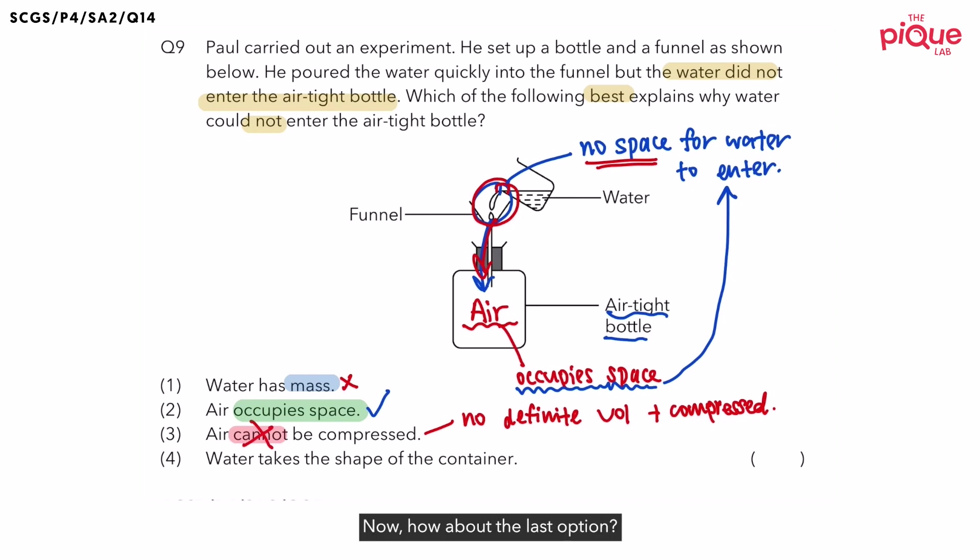Now, how about the last option? Water takes the shape of the container. So is this statement correct? Water is a liquid. Do liquids have definite shape? No, liquids have no definite shape. So if liquid has no definite shape, can liquid take the shape of the container? Yes. So actually, statement four is a correct statement.